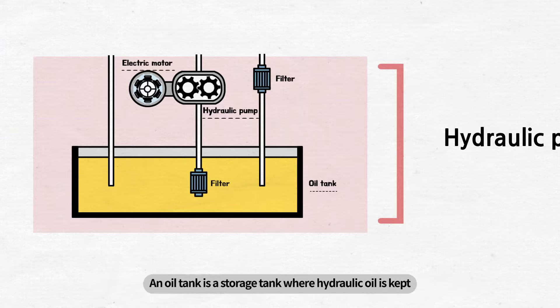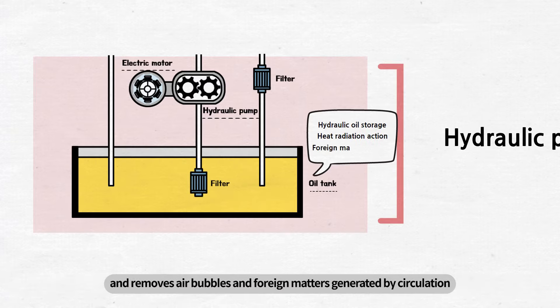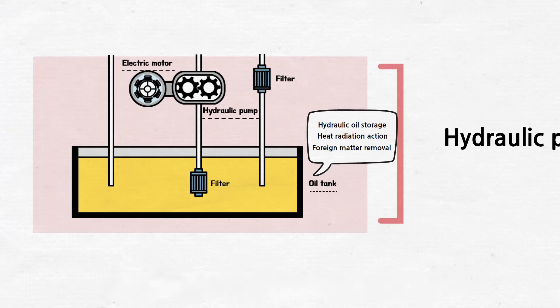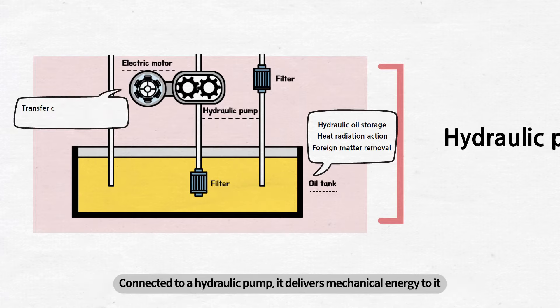An oil tank is a storage tank where hydraulic oil is kept. This tank not only stores oil, but also cools off the high-temperature hydraulic oil through heat dissipation and removes air bubbles and foreign matters generated by circulation. An electric motor, or an engine, is a device required to operate a hydraulic pump. Connected to a hydraulic pump, it delivers mechanical energy to it.